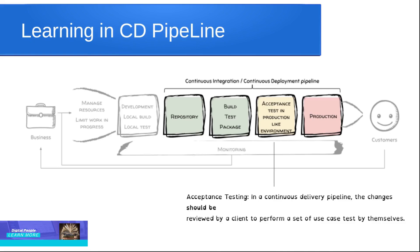Acceptance Testing: In a continuous delivery pipeline, changes should be reviewed by the client to perform a set of use case tests by themselves. This test is considered a sign-off to deploy the application into production. In some companies, this sign-off happens through the concept of beta testing. In service-based companies, a sign-off from the client is a must, while product-based companies follow beta testing.